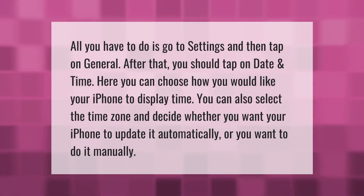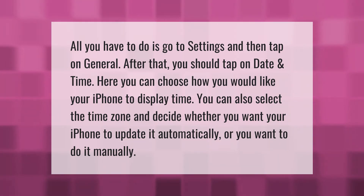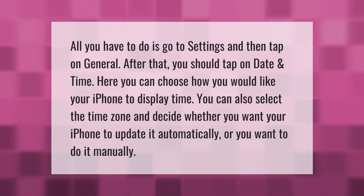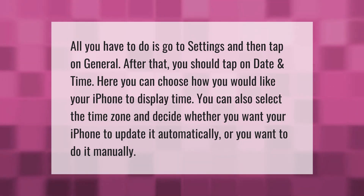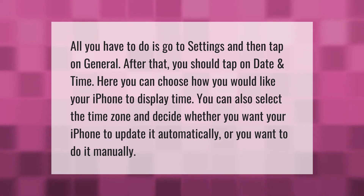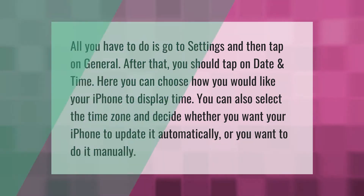Go to Settings and then tap on General. After that, tap on Date and Time. Here you can choose how you would like your iPhone to display time. You can also select the time zone and decide whether you want your iPhone to update it automatically or manually. Thank you for watching — please subscribe and hit the bell notification.